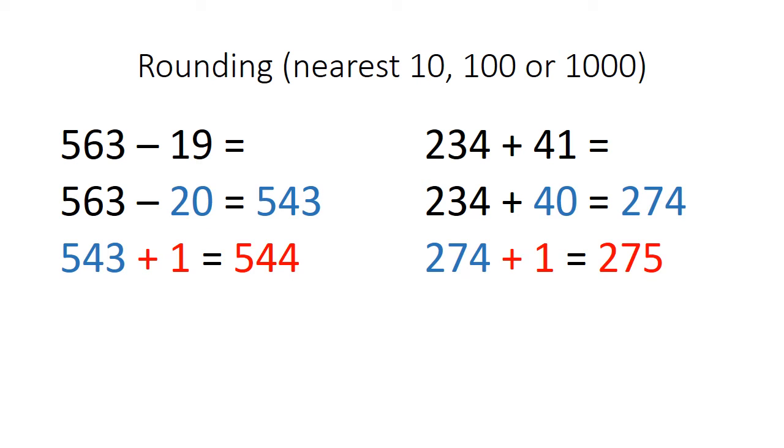My other example is an addition one. 234 add 41. Rather than counting up 41 times, I have rounded my number down to 40. I can do 234 add 40 in my head really easily. The answer is 274. Then all I need to do is add the extra one so that I'm adding 41. This gives me 275.